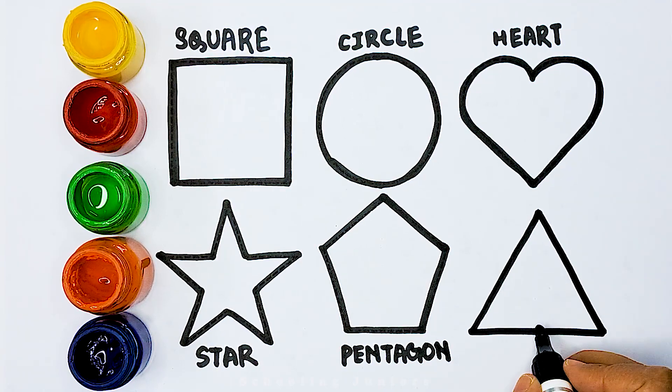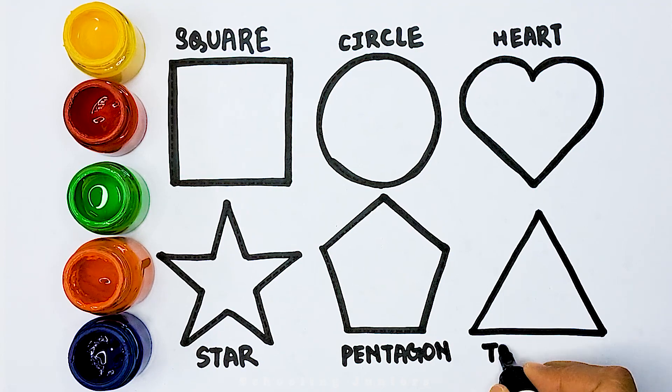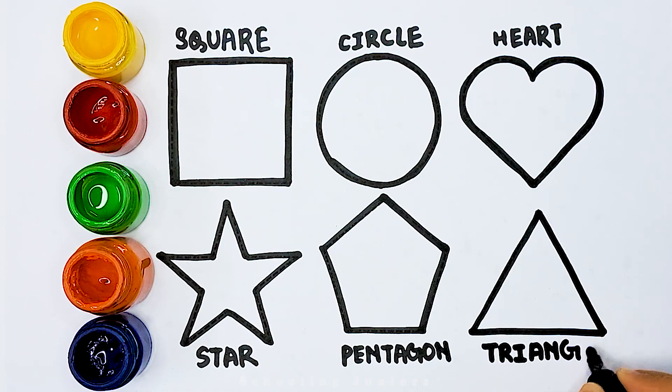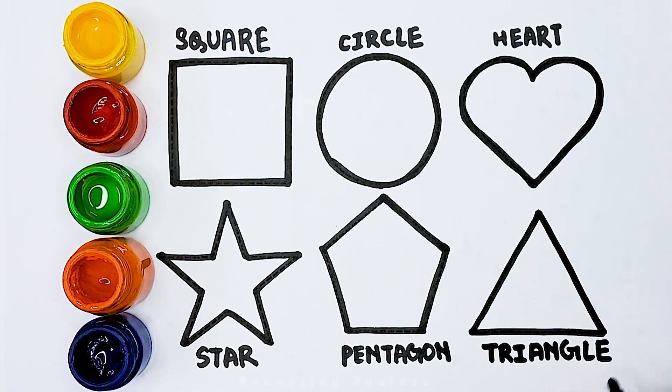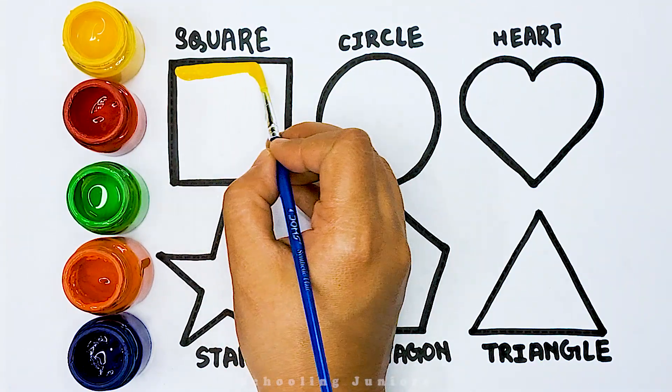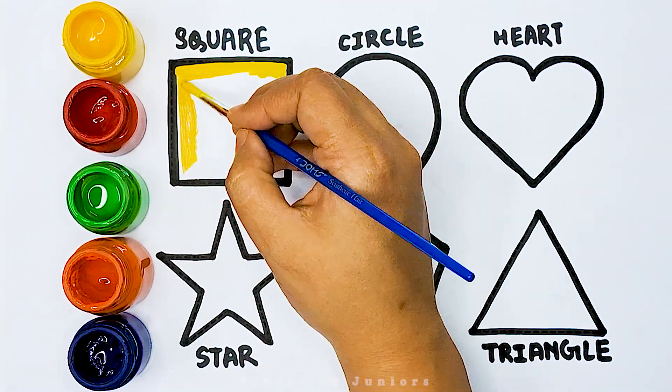Triangle: T, R, I, A, N, G, L, E, triangle. Yellow color square.